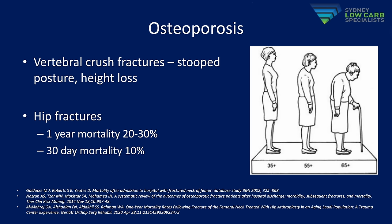Osteoporosis is often under-treated and unrecognised because it's typically a clinically silent disease unless it manifests in a fracture. In the clinic, one clue I look for is if a patient's height is continuously going down over the years, especially with a characteristic stooped posture. Of all the complications, hip fracture is generally the most feared — it brings pain, hospital stay, potential surgery, and a fairly significant associated mortality risk.